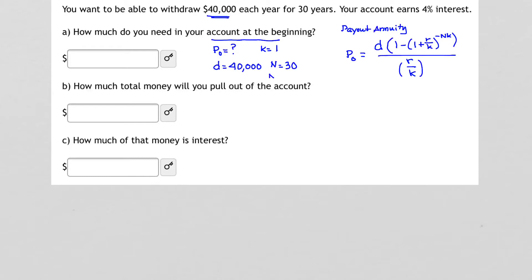That makes N times K, 1 times 30, or just 30 as well. And finally, R, or our interest rate, that's 4%, or if we like, 0.04.